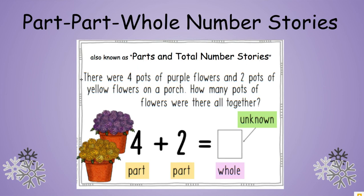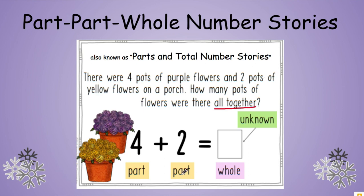Here's our example. There were four pots of purple flowers and two pots of yellow flowers on a porch. How many pots of flowers were there all together? In a part-part-total number story, we have two numbers — those are our parts — that we put together or subtract. We knew that there are four purple flowers and two yellow flowers.